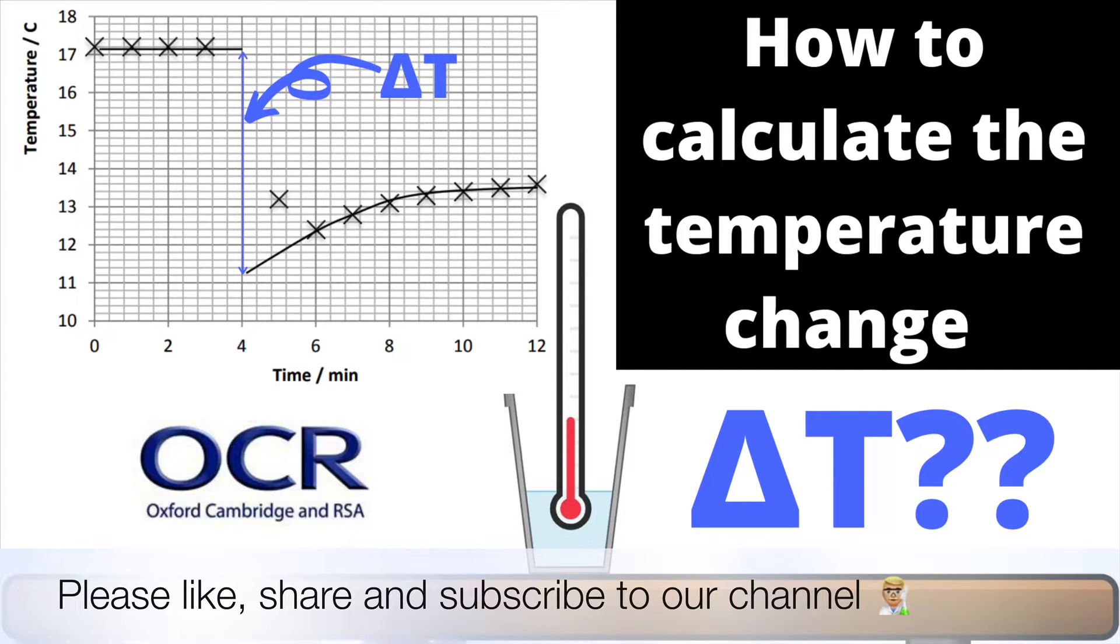This kind of calorimeter is often described as the direct method and it's when we've got for example two solutions being mixed together in a polystyrene cup. We've recorded the temperature throughout this experiment from zero up to twelve minutes for every minute except minute four. At minute four two solutions were mixed together and we didn't record the temperature change at that point.